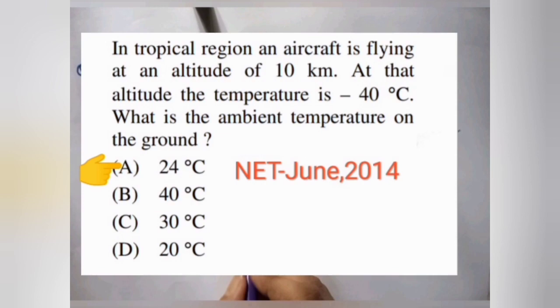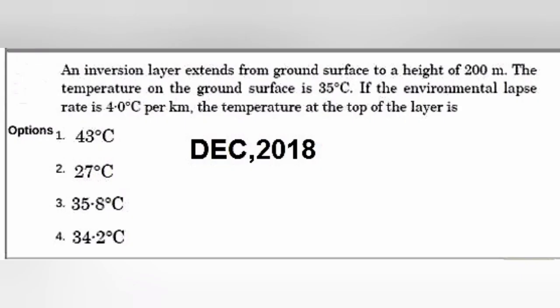Now let's do one different kind of question. This was asked in the December NET 2018. The question was: an inversion layer extends from ground surface to a height of 200 meter. The temperature on the ground surface is 35 degree celsius. And if the environmental lapse rate is 4 degree celsius per kilometer, the temperature at the top of the layer is how much?